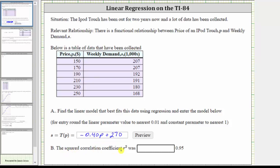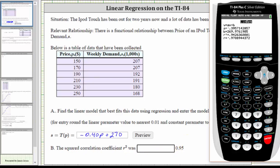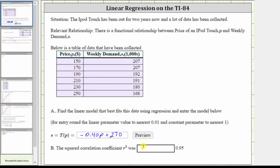Part B, the squared correlation coefficient was what compared to 0.95? So going back to the calculator, notice R squared is approximately 0.94, and therefore it's less than 0.95. So we'll say less than here.